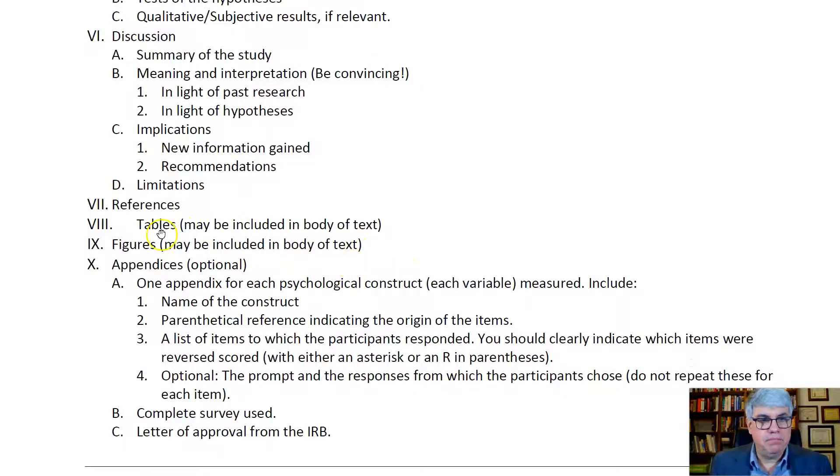And then we've got the appendices. The appendices are optional, unless your advisor says you have to have appendices. What I think is really good to do is have one appendix for each psychological construct, each variable that you have measured. You want to include the name of the construct, a parenthetical reference indicating the origin of the items. Instead of just giving two or three sample items that the participant responded to, you're going to put all the items in the scale that you used. You need to mark which ones were reverse scored. This is especially important when you go to analyze the data.